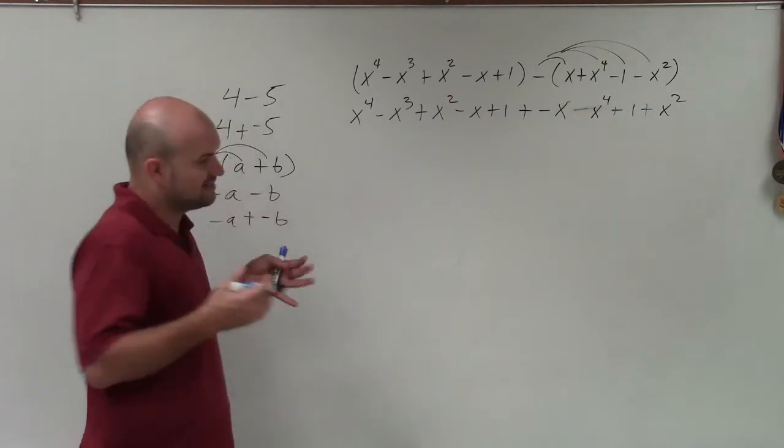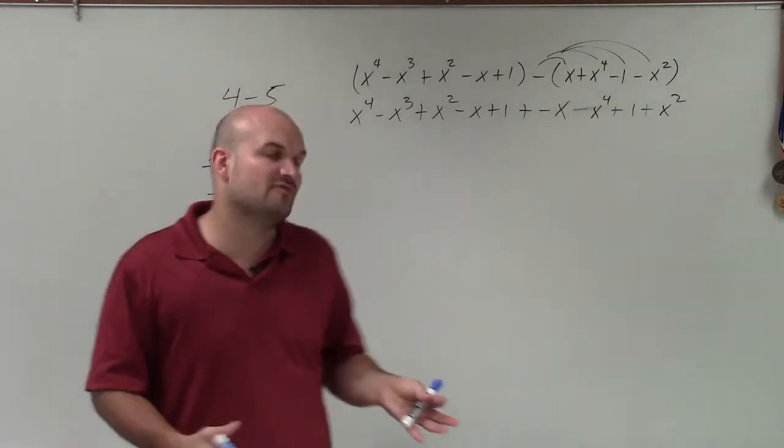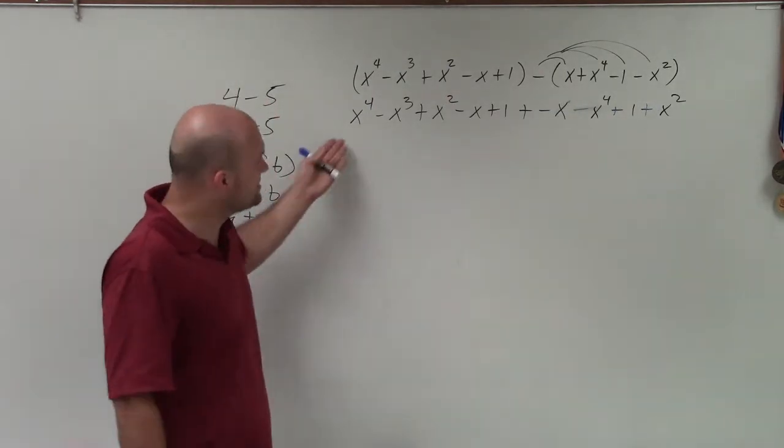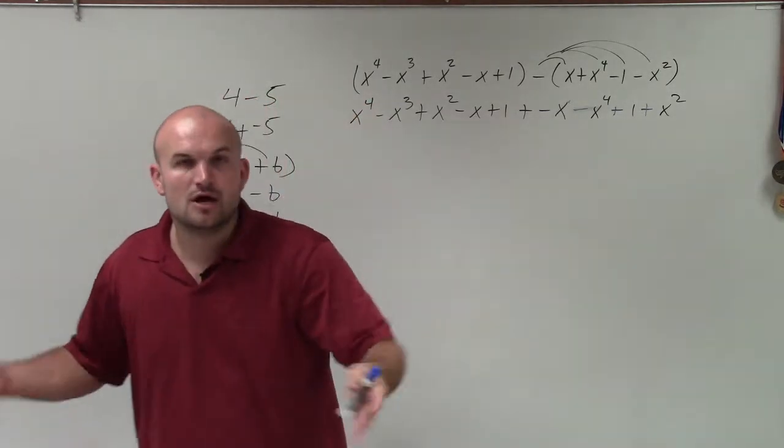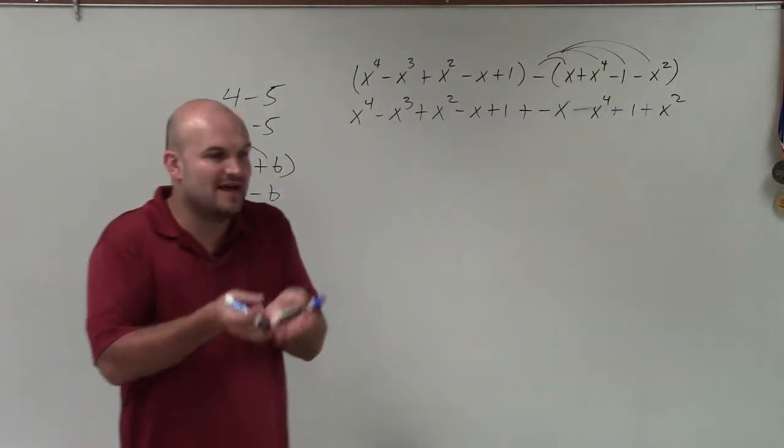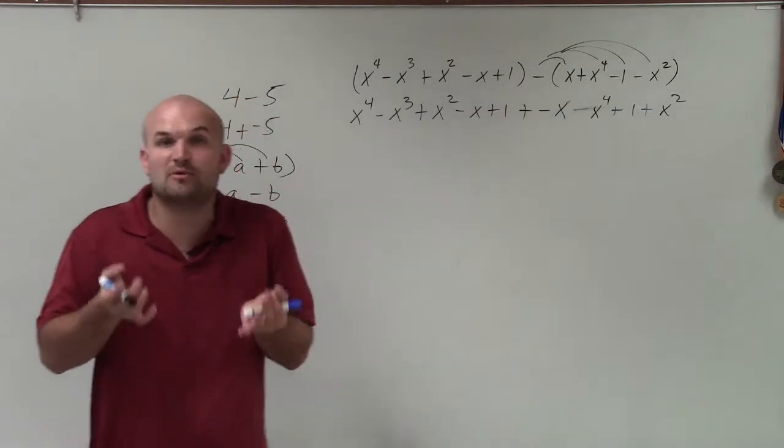So now I need to find common terms—terms that have the same variable factors. You can see these all have x's, but they're all x's to different powers. Well, if they have the same powers and they have the same variable factors, meaning the highest factor for x to the 4th is x to the 4th.